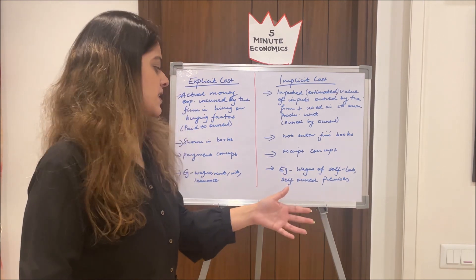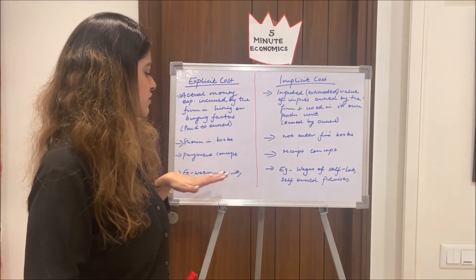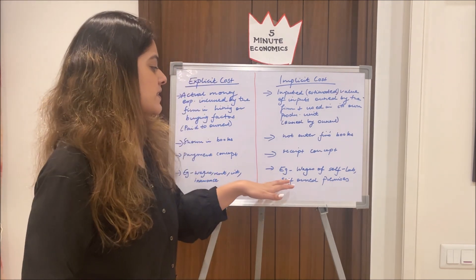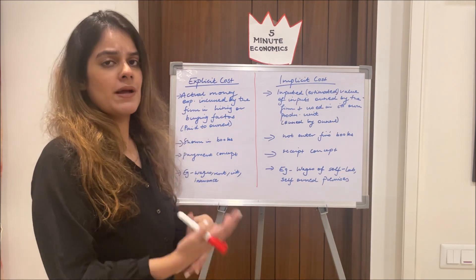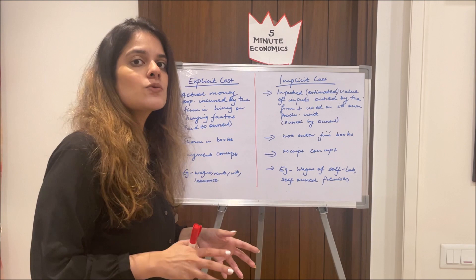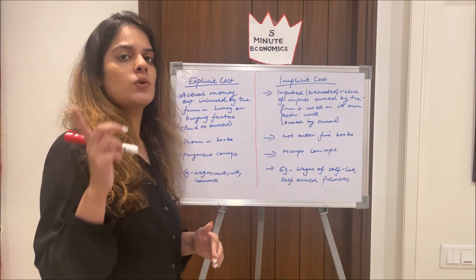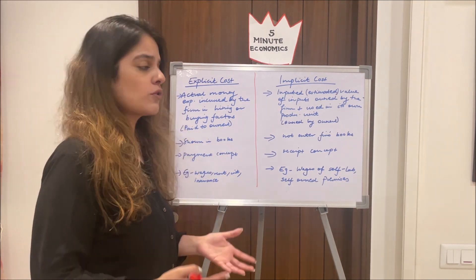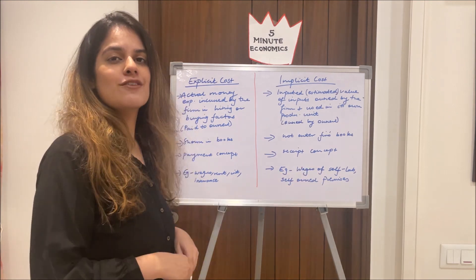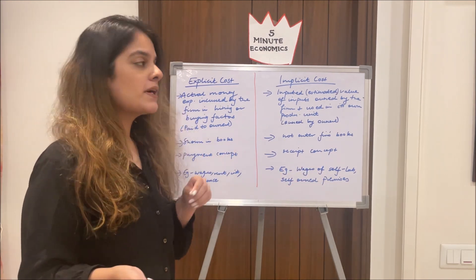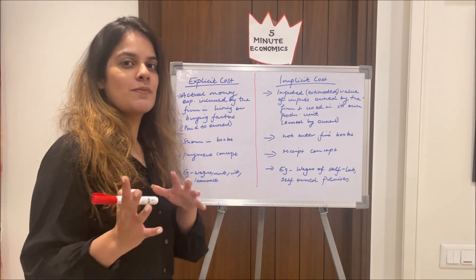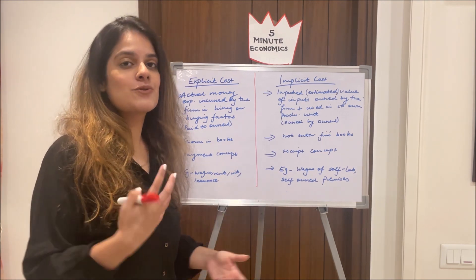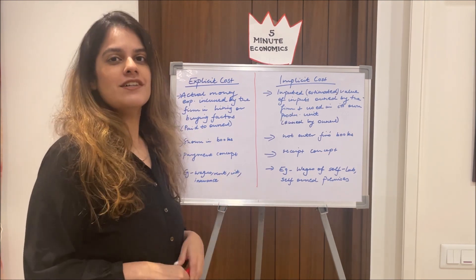Implicit cost is not entered in the firm's books because it's our own cost. Explicit cost is a payment concept — examples include wages, rent, and interest paid to someone external. Implicit cost covers things like self-labor: if I'm working in my own firm I won't pay myself, so that is implicit cost. A simple way to remember: explicit = external, paying to someone outside; implicit = internal, not paid to someone outside the firm.